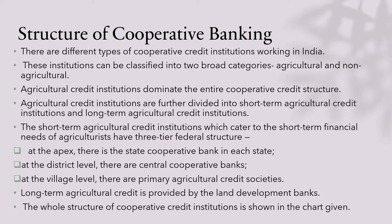Short-term agricultural credit institutions have a three-tiered federal structure, starting with the apex body where there are state cooperative banks. Then at the district level, there are central cooperative banks. And at the village level, there are primary agriculture credit societies. Coming to long-term agriculture credit, this is mainly provided by the land development banks in India.